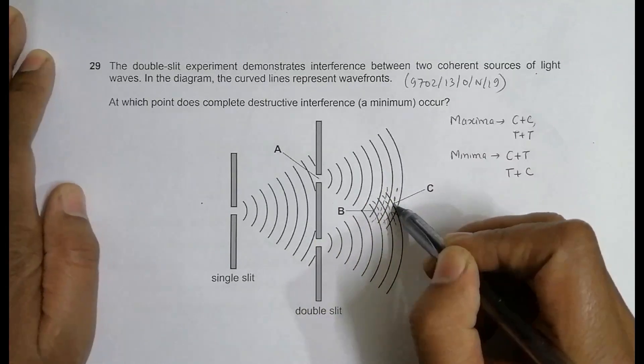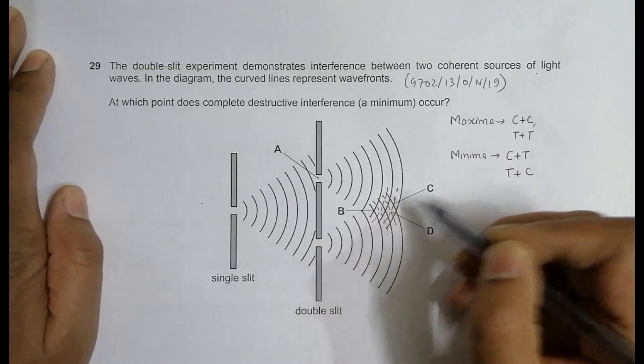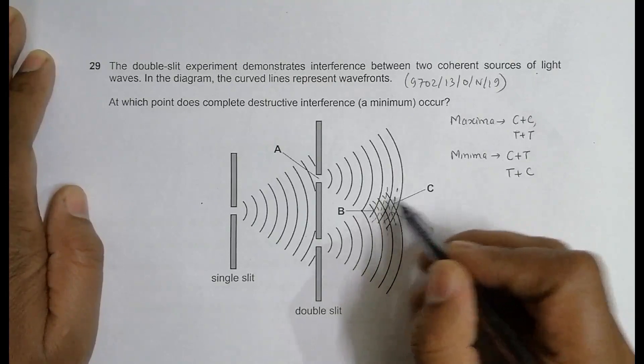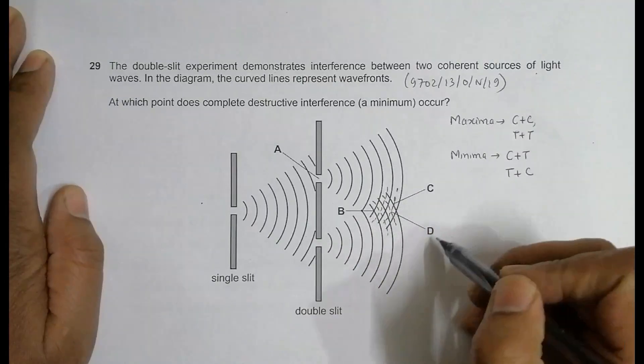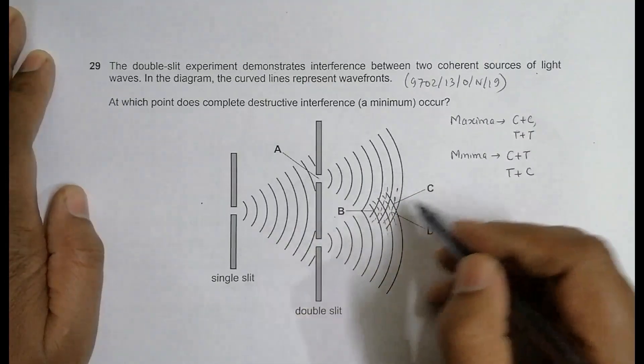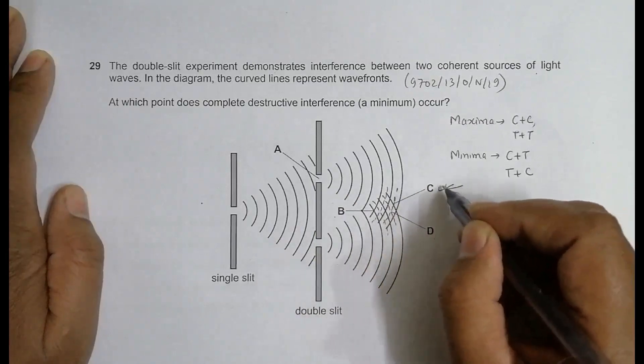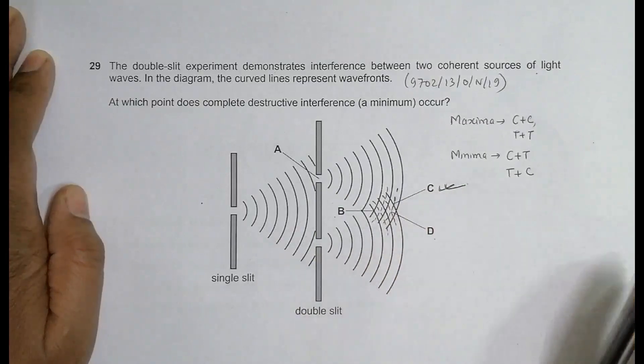Let's try D also. At D we have trough and trough, so trough and trough should be maximum. D is maxima, B is maxima, A is middle, and C is minima. So C should be the correct choice. Just remember, C should be the correct choice.